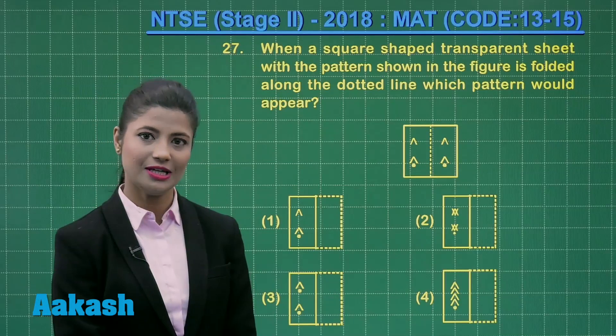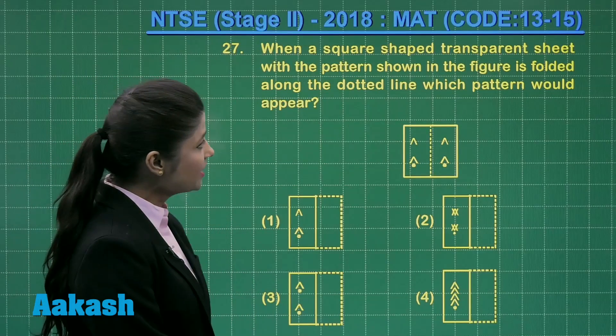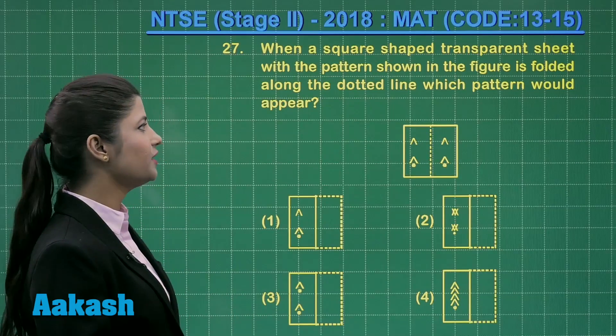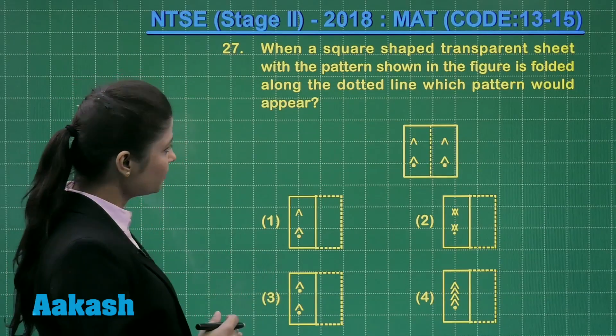Now let us discuss this question number 27. When a square shaped transparent sheet with the pattern shown in the figure is folded along the dotted line, which pattern would appear?